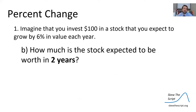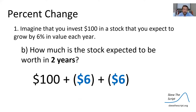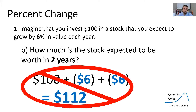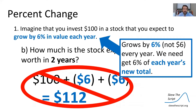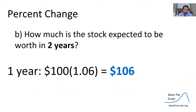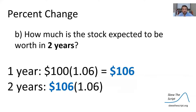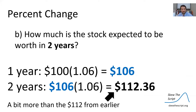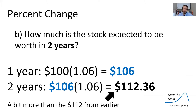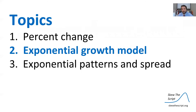The next natural question is: how much is the stock expected to be worth in two years? You might think the right way is $100 plus $6 plus $6 to get $112. This is actually incorrect. Remember that what we have grows by 6%, not $6 every year — we need 6% of each year's new total. After one year our stock is worth $106, so to calculate two years we multiply $106 by 1.06, which gets us $112.36, a bit more than $112 because we're starting from a higher amount.